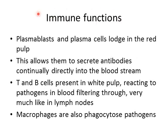The spleen can be thought of as an organ of the immune system. Our B cells — our more advanced plasmablasts and plasma cells — lodge in the red pulp and continuously secrete antibodies directly into the bloodstream, going one step further than lymph nodes by secreting directly into the blood. T and B cells lodge in our white pulp lymphoid tissue and react to pathogens just as they do in lymph nodes, reacting to pathogens in the blood that filters through. The macrophages also phagocytose pathogens stranded in the cords, not just red blood cells.